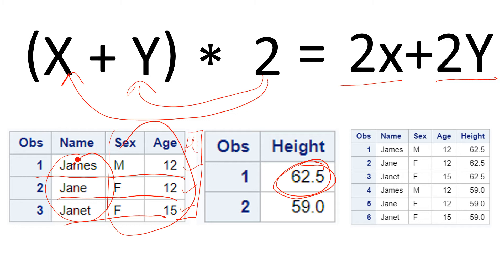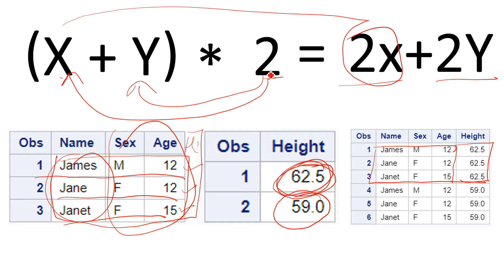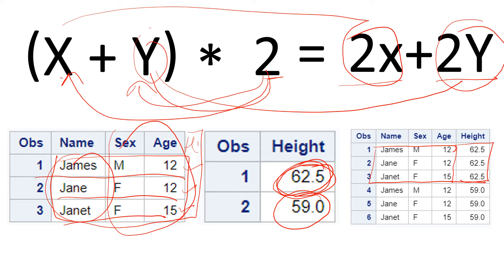You can see all three observations here — this entire record is copied and made available. The second value comes in and gets joined with the first table values. Same thing happens with the second value — just as 2 gets multiplied with x to give 2x, and then 2 gets multiplied with y to give 2y. So first 62.5 gets joined with all three observations and the result appears here.